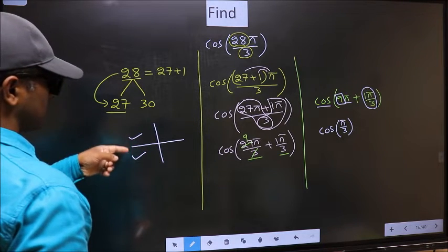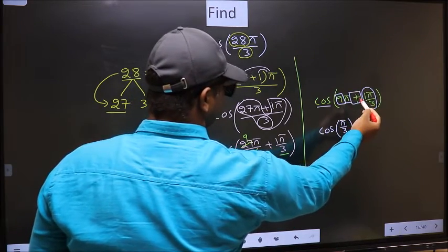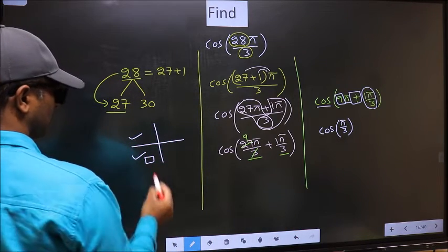So now to select the quadrant, we should look at this symbol. Here we have plus, so the angle lies in the third quadrant.